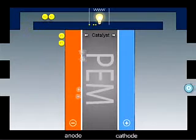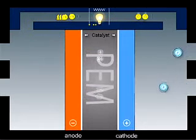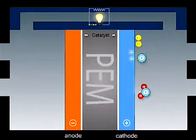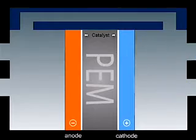On the oxygen side of the membrane, the protons and the electrons react with oxygen from the air, in the presence of a second catalyst layer, generating water and heat.